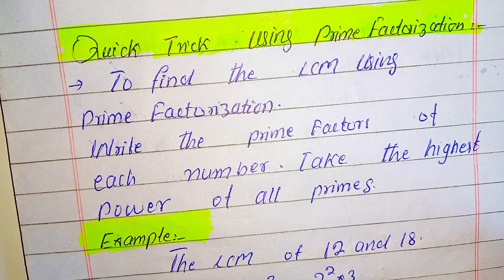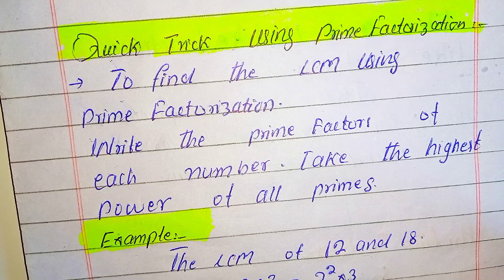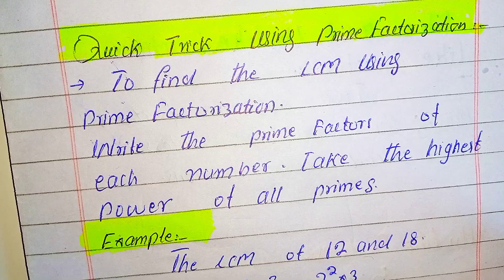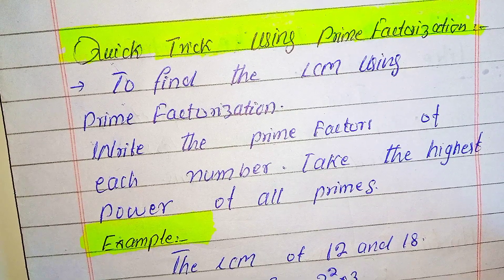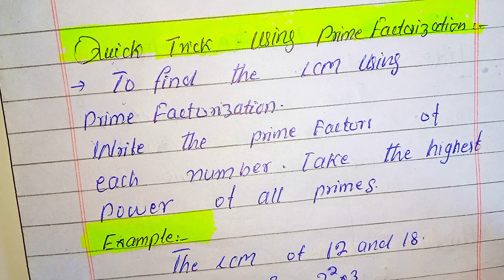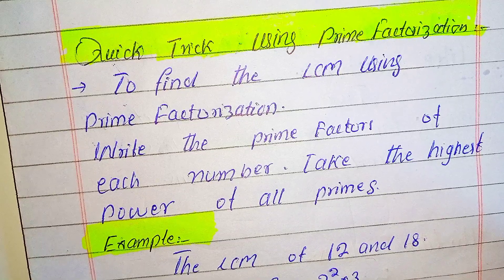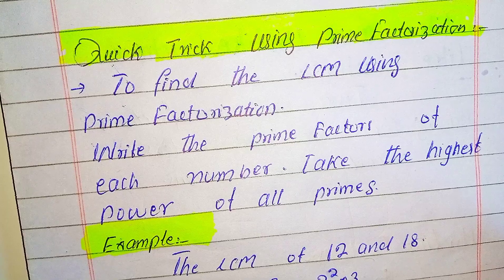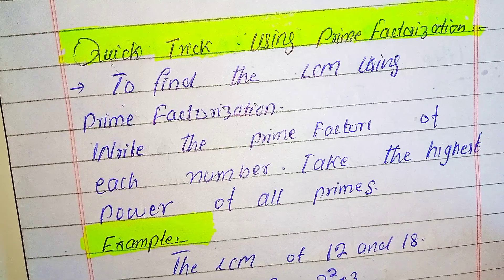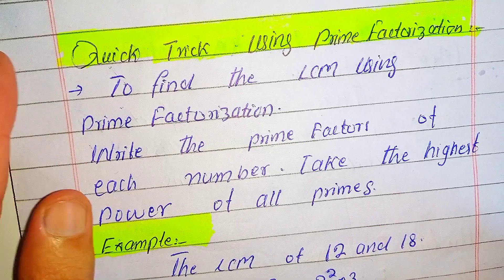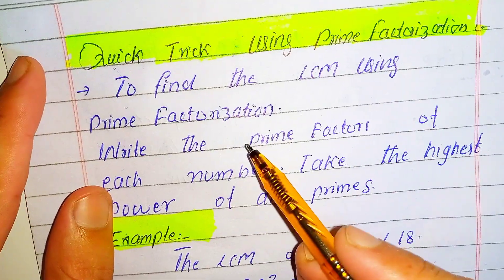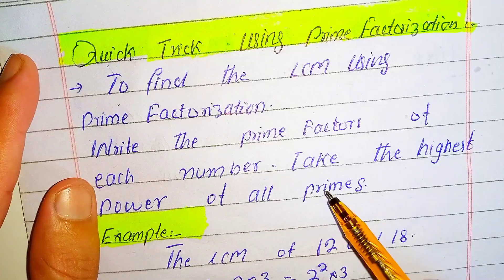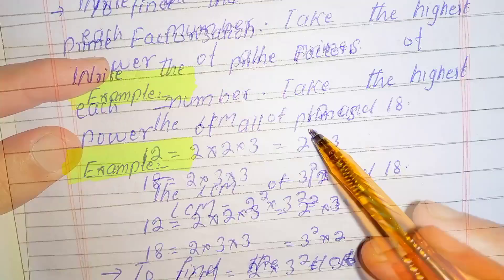If you want to find the LCM or HCF using prime factorization, there is a trick you can use to find them easily. In this video I will explain. To find the LCM using prime factorization, first write the prime factors of each number, then take the highest power of all prime factors.